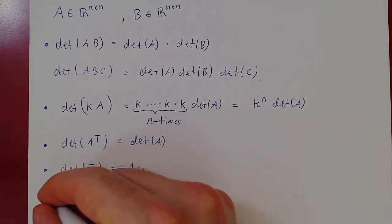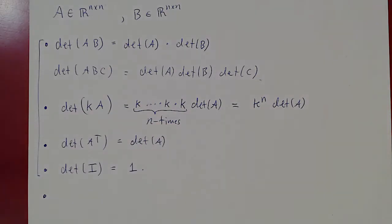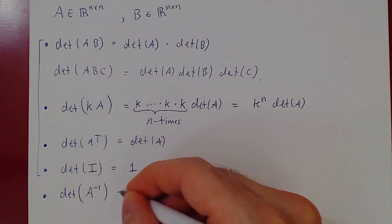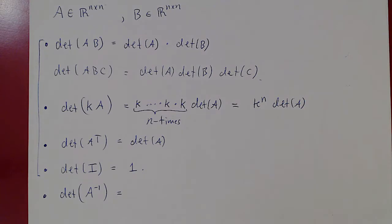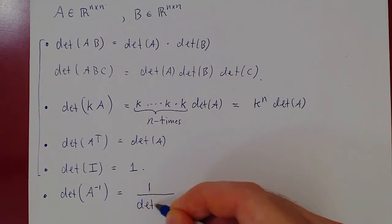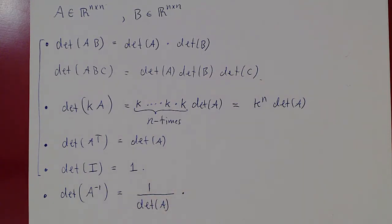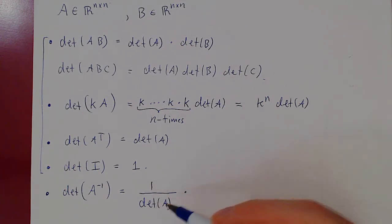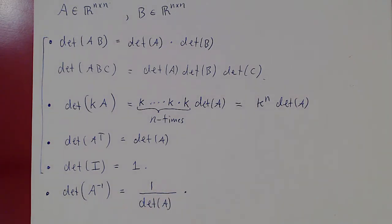Here's one last property, whose proof I'll leave to you using the previous properties. If A is invertible — meaning A inverse exists — then the determinant of A inverse is simply 1 over the determinant of A. The only issue would be if the determinant of A equals 0, in which case 1 over 0 is not defined. That's one more equivalency for invertibility.